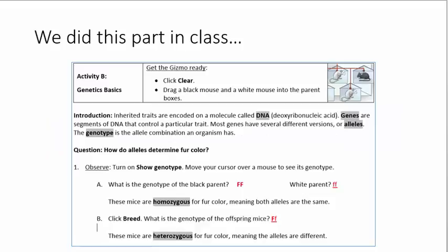Activity B, this part we did in class together and this is what we got. We used the letter F to represent the genotype. Remember, a genotype is the gene or the letters, the alleles. Phenotype is what we physically see. So in this example on number one A, the genotype for a black furred parent is big F, big F.